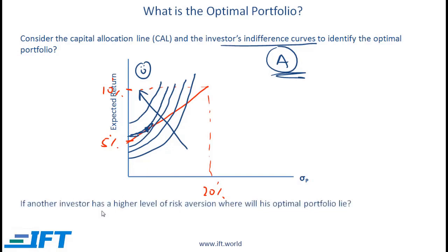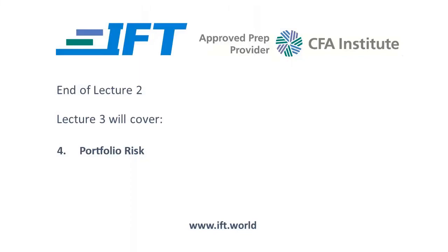For another investor with a higher level of risk aversion, the indifference curves will be even steeper, so the tangent point will be closer to the risk-free asset — to the left on the capital allocation line. Intuitively, a more risk averse investor will naturally have a higher weightage in the risk-free asset.